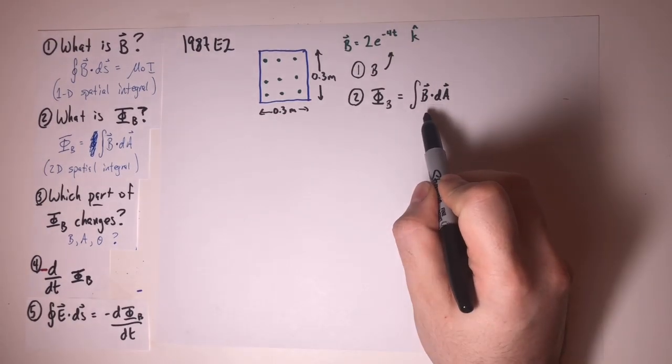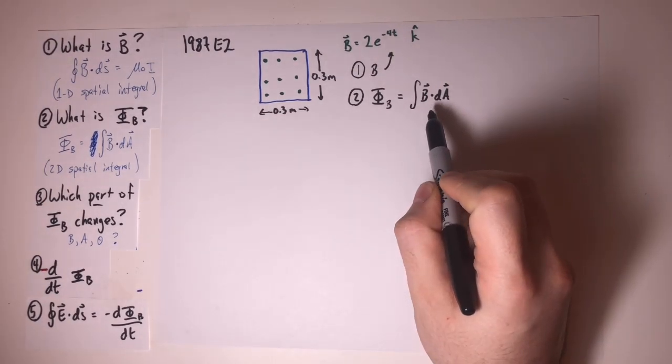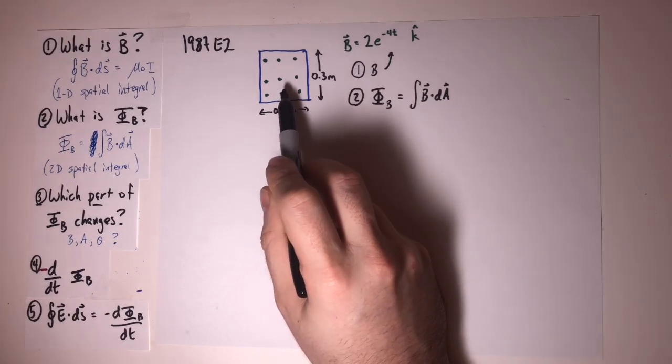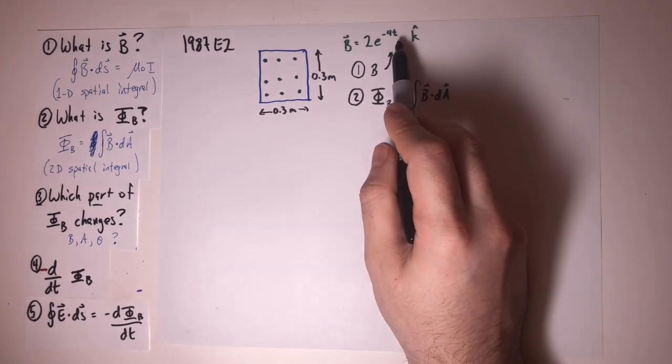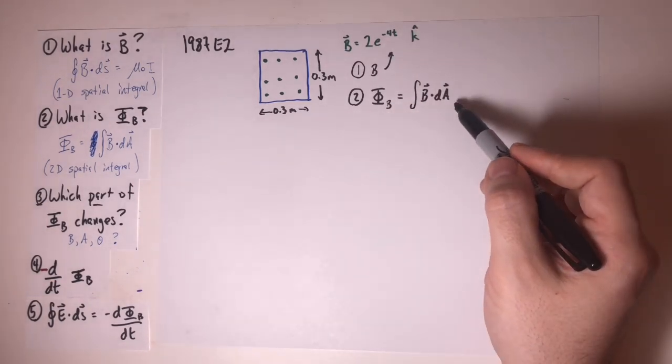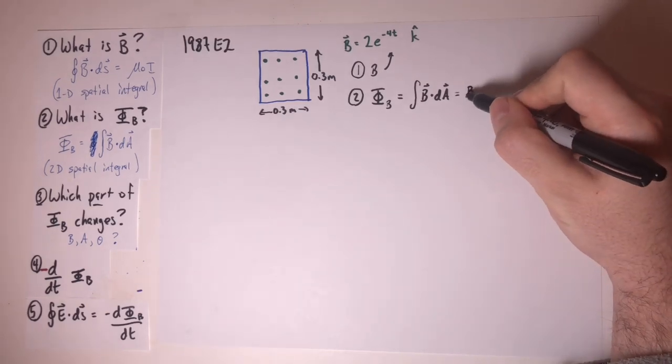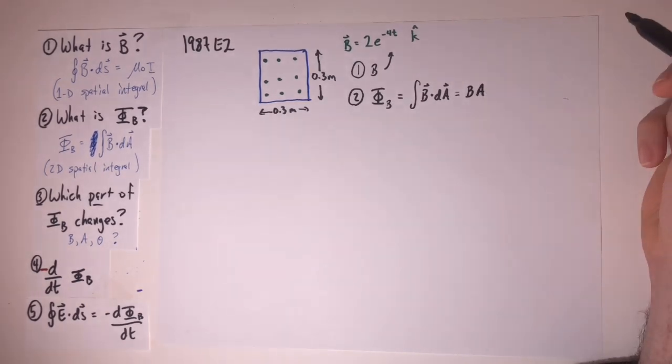This complicated flux integral is made easier by three major things. Number one, the wire is a square and it never changes orientation. Number two, the field is uniform in direction. And number three, the field doesn't vary spatially. It has the same value everywhere inside the loop. It only varies according to time. So that doesn't matter as far as this 2D spatial integral is concerned. So this expression simply becomes B multiplied by A.